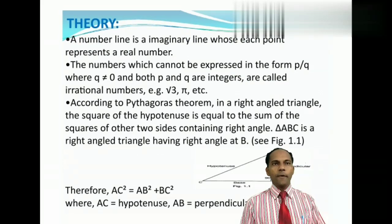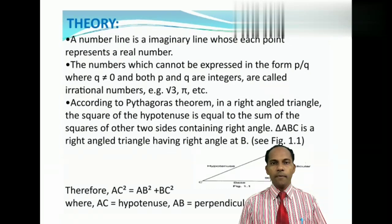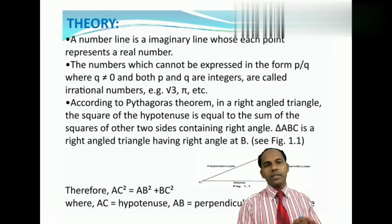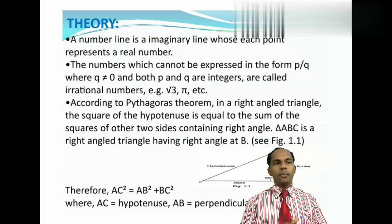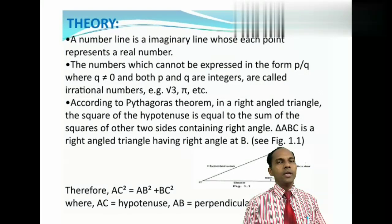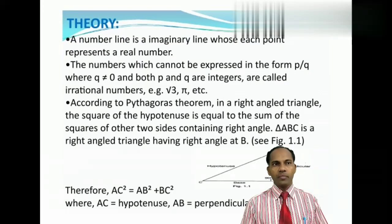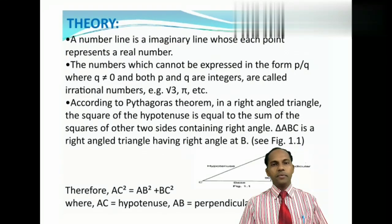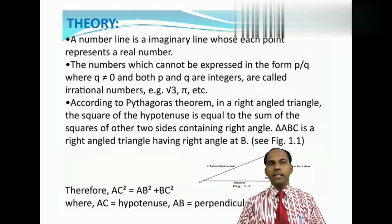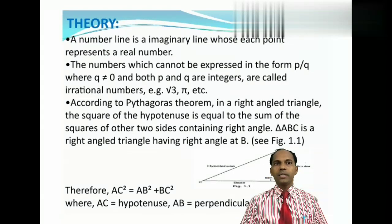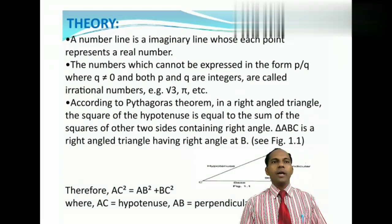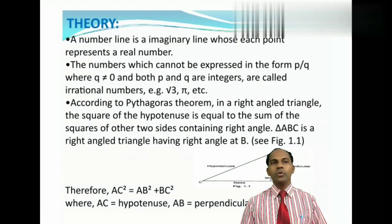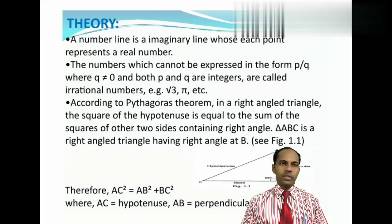And Pythagoras theorem. You know the Pythagoras theorem. In a right-angled triangle, the square of hypotenuse is equal to the sum of square of perpendicular and base. So in triangle ABC, if B is 90 degrees, AC is the hypotenuse, AB is the perpendicular, and BC is the base. So AC square is equal to AB square plus BC square.